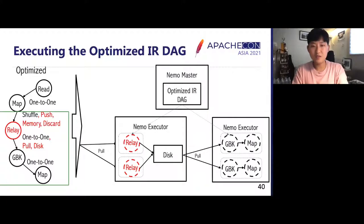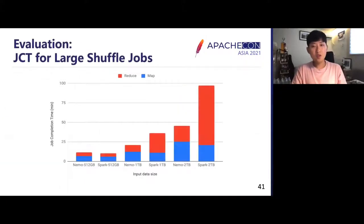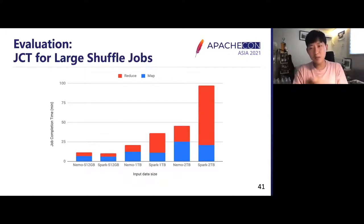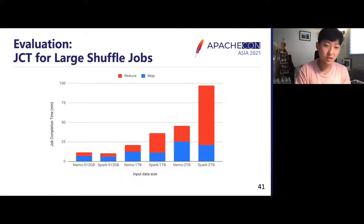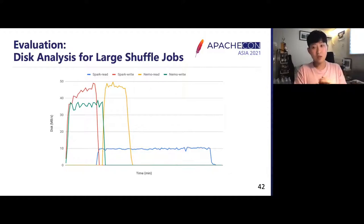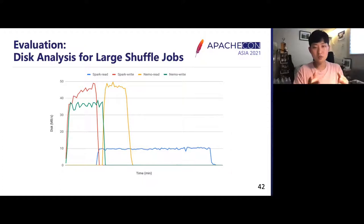The data written to disk can then be read sequentially by the following GroupByKey and map tasks, preventing random disk overheads. Our evaluations for a MapReduce workload show that for Spark, the reduce tasks take up the majority of job completion time for large datasets, as you can see in the second, fourth, and sixth graphs. Nemo successfully keeps that ratio small, though it results in a slight increase in the proportion of map tasks due to the relay operations, as shown in the first, third, and fifth graphs. Another evaluation shows Nemo maintains high disk throughput throughout the entire workload, resulting in short job completion time, whereas Spark shows very small disk throughput during long reduce tasks.